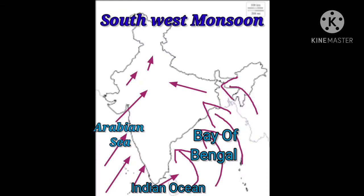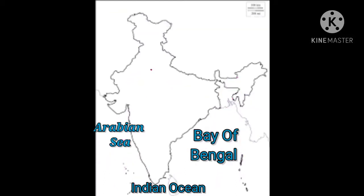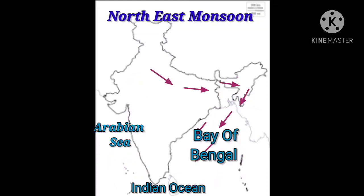Both meet the Shivalik mountain range. Next, northeast monsoon - it is a retreating monsoon. Wind starts from the northeast and flows towards the Bay of Bengal, and it gives more rainfall to Tamil Nadu and Andhra Pradesh.